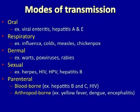Viruses can spread from one host to another by a number of different routes. Several are transmitted by ingestion, such as the viral enteritis or hepatitis viruses. Some can be spread by respiratory droplets or even aerosols — chickenpox is an example of the latter case. Some spread by contact with or penetration through the skin, such as by animal bites or direct contact. Several viruses are transmitted sexually, and some parenterally, either by the blood-borne route or by arthropods.